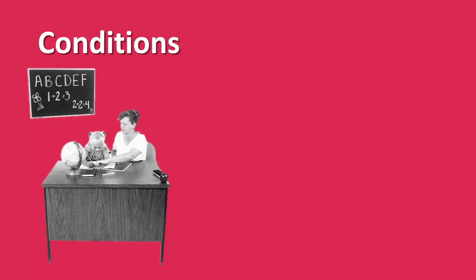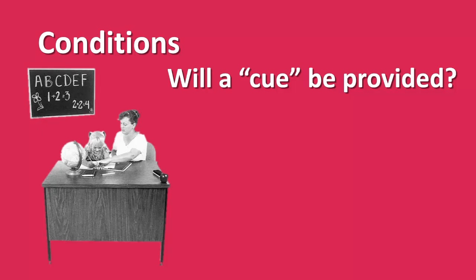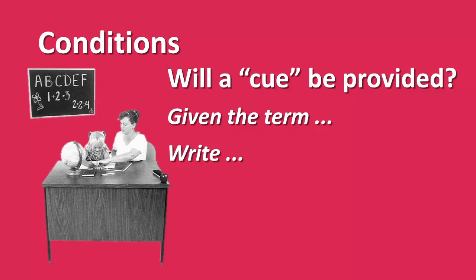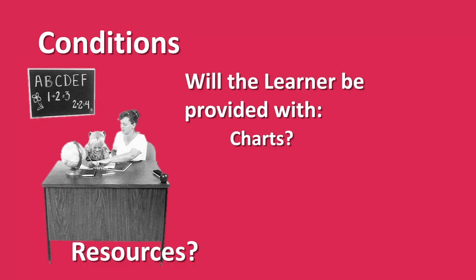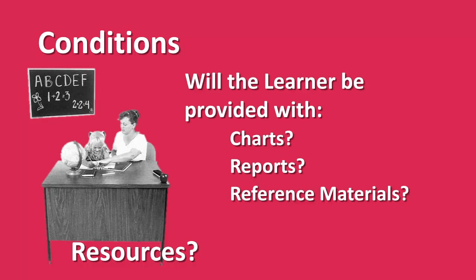Conditions are the exact set of circumstances and resources available to the learner. When defining conditions, the designer needs to consider the behavior being demonstrated and the characteristics of the target population. Will a cue be provided to the learner, such as 'given the term'? What resources will be required to perform the task — will there be charts, reports, or reference materials provided? The designer also needs to consider the scope and complexity of the task and how relevant the information will be. These are the things that make up the condition of the performance objective.